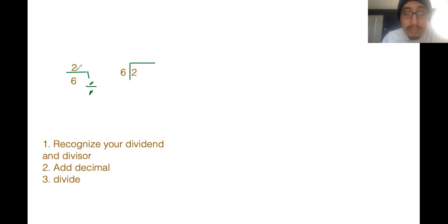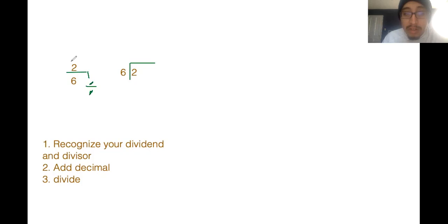So this little bar right here is your division sign, so two is getting divided by six. If two is getting divided by six, that means two is going to be inside of your little box. Two divided by six — six is dividing two, so six is going to be on the outside. Your denominator, your six, is always going to be on the outside. Your numerator, your two in this case, is always going to be on the inside.